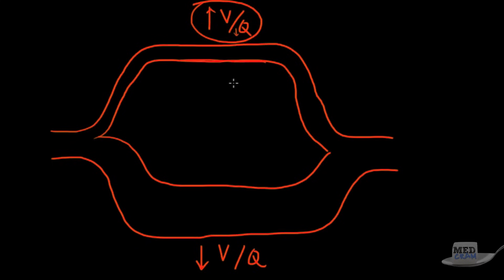This is important - areas of high VQ by definition are going to have low perfusion. That's why I've drawn this limb skinny because there's not going to be a lot of blood going through this area. Whereas by definition areas with low VQ are going to have quite a bit of perfusion going through this area.